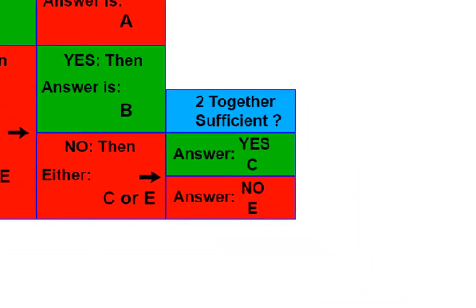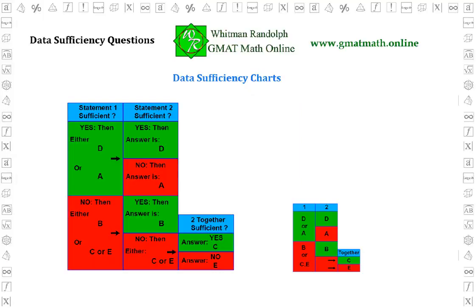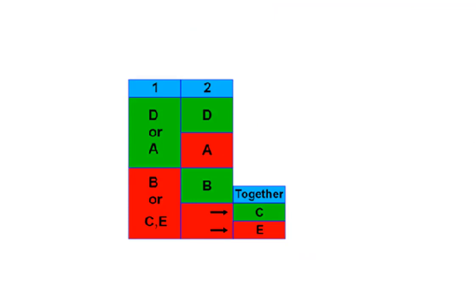If neither statement one nor statement two is sufficient, we go on to column three. We consider the two statements together to answer the question: are they or are they not sufficient together? If the two statements do provide sufficient information when considered together, the answer is C. Otherwise, the answer is E. Here is a reduced version of the table, which we'll use as we go through the examples. Green means yes, and red means no.